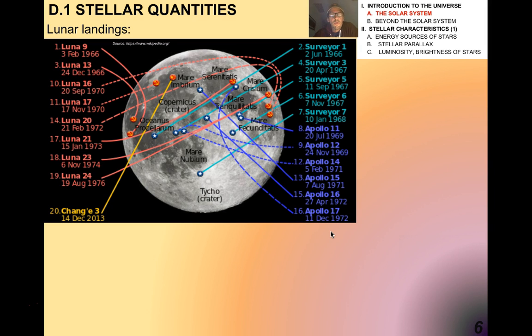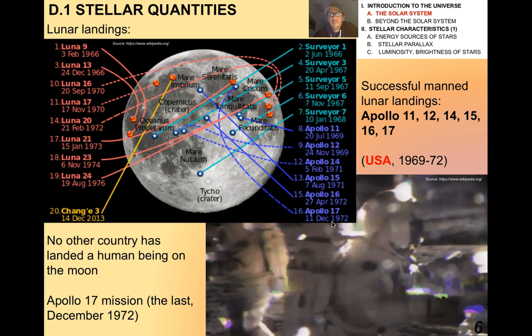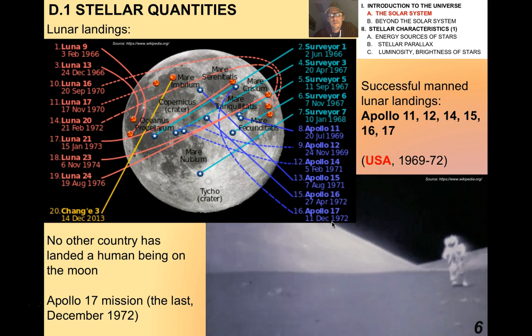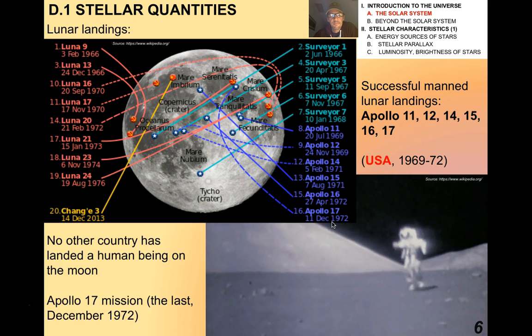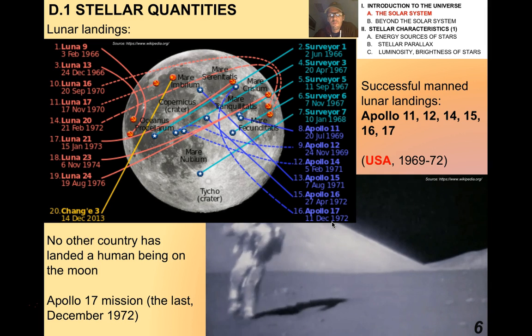Lunar landings. There have been a lot of successful manned lunar landings: Apollos 11, 12, 14, 15, 16, 17, all by the United States, between 1969 and 1972. We have not been back to the Moon since then. No human being has been back to the Moon since then, unfortunately. No other country has landed a human being on the Moon at all. It's sort of an American domain at the moment.